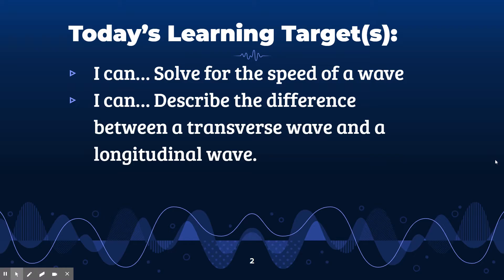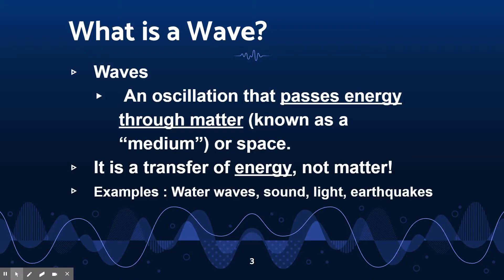What we're going to be going over today is a couple things about waves. Specifically, we're going to look at determining the speed of a wave, how fast it's traveling, and then describing the differences between our two types of waves, the transverse wave and the longitudinal wave. Along the way, we're also going to be looking at some wave terminology and trying to determine some different characteristics about these waves.